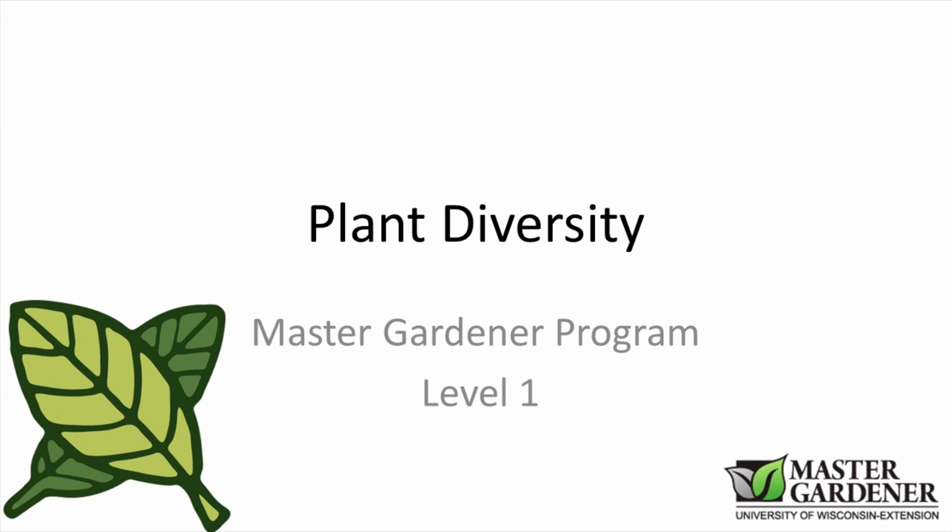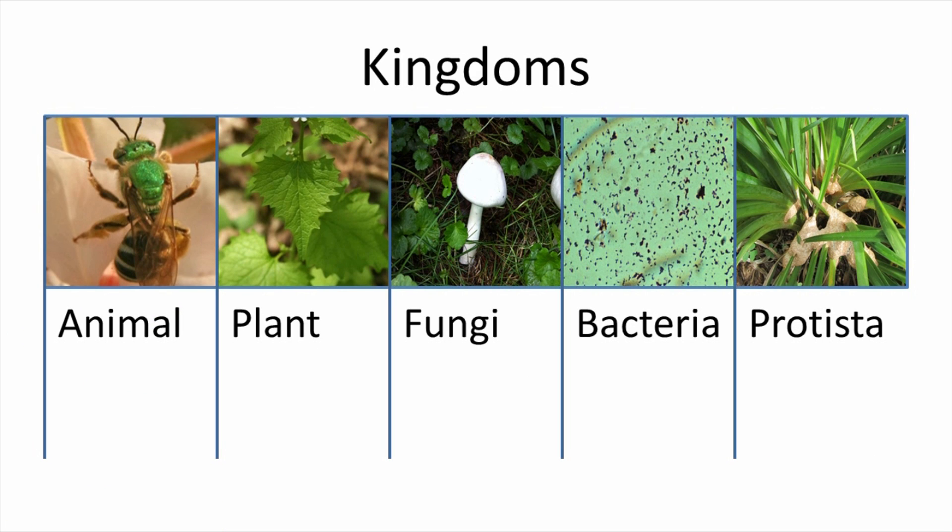In a garden center, you may look for shade and sun plant sections, or saunter through the woody plants on your way to the vegetables. That's just one way we can divide up the plant world. For a few minutes, we'll take a look at plants the way scientists look at plants. In order to understand the natural world, scientists have tried to organize and classify all living things.